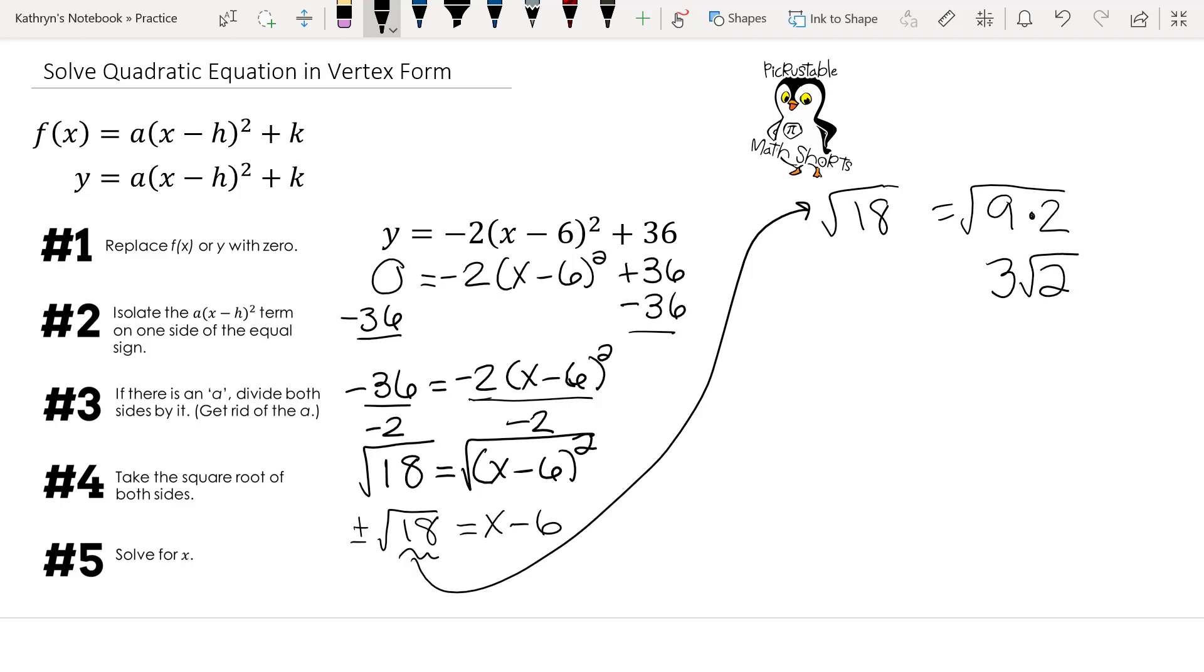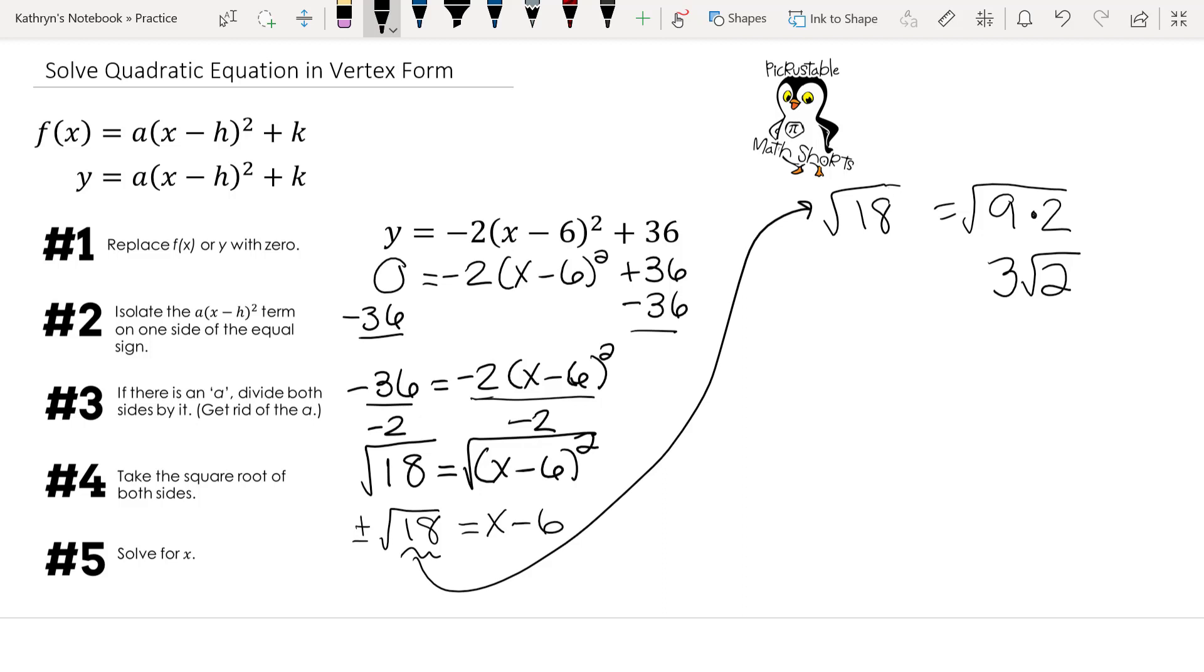Since the square root of 2 doesn't break up, that's what we're going to end up with. Plus or minus 3 times the square root of 2 equals x minus 6.